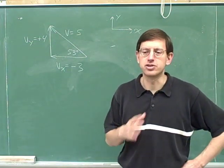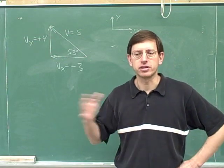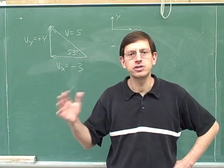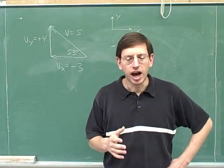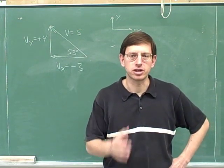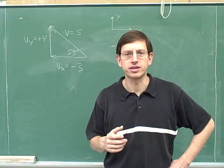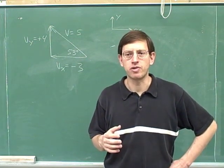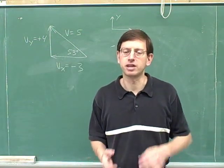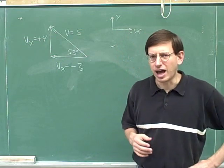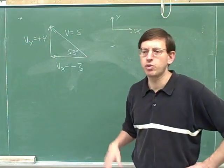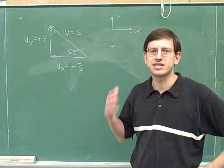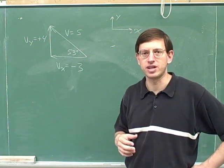The trickier concept is direction. Students are often a little confused about how to represent the direction of a vector, and that's understandable because we actually have two different ways of representing directions. There's one way to represent the direction of a vector component, and a different way to represent the direction of the overall vector. The direction of a component is represented using a sign — plus or minus.